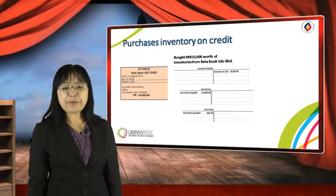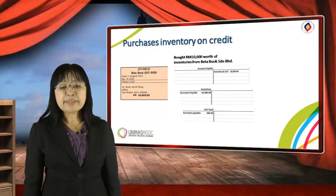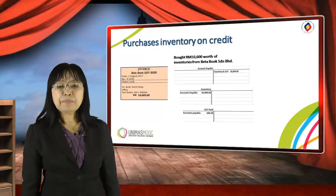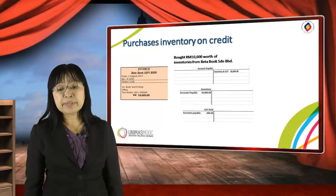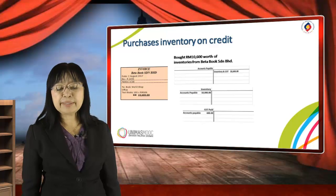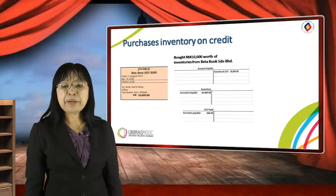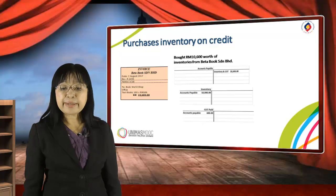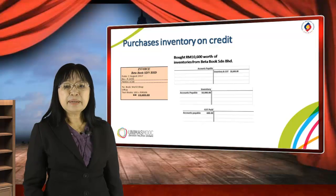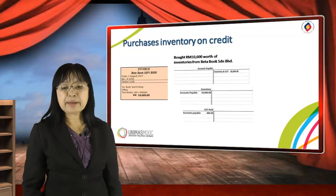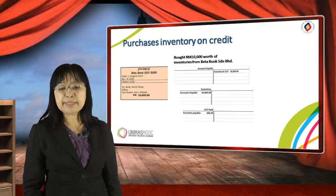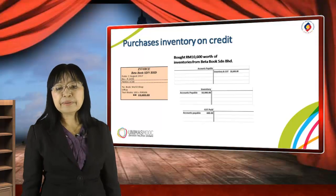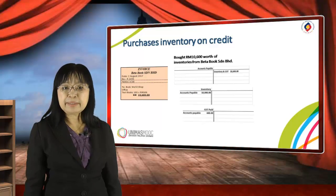Let's see purchases of inventory on credit. On the left-hand side you will see a sample invoice. The invoice of $10,600 is credited in accounts payable. On the debit side, you will see the inventory account and the GST paid account. The inventory value is debited, and GST paid of $600 is debited. So the two debits together equal the credit in the accounts payable on the credit side, which will appear in the general ledger.